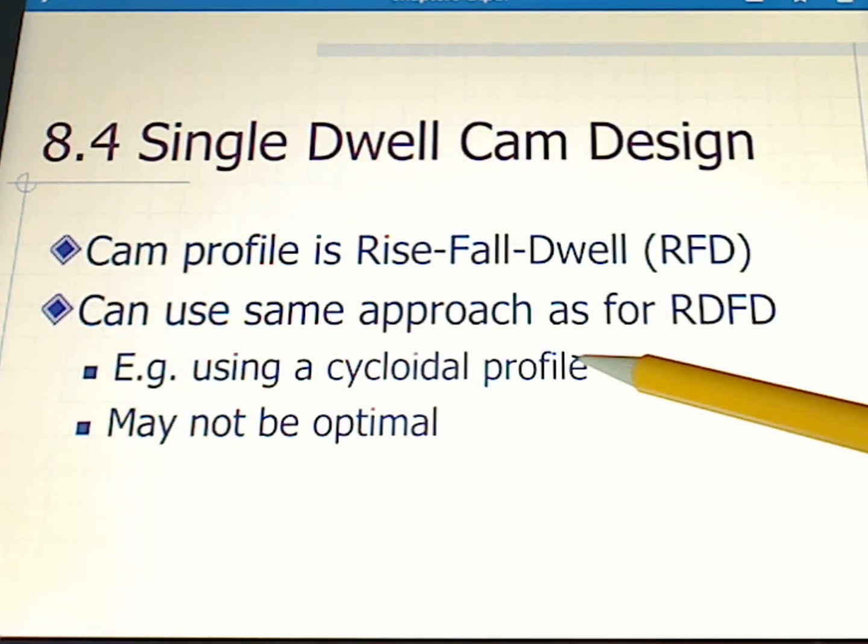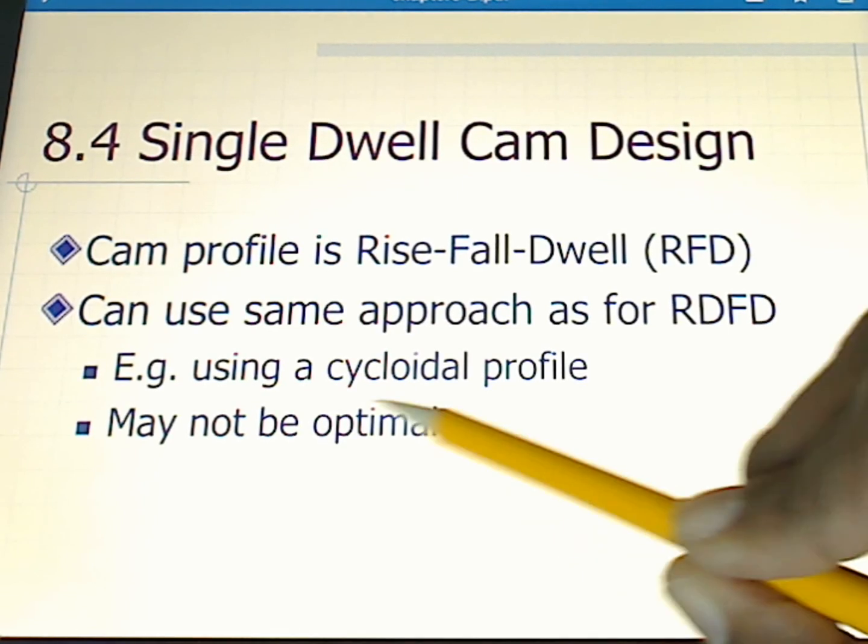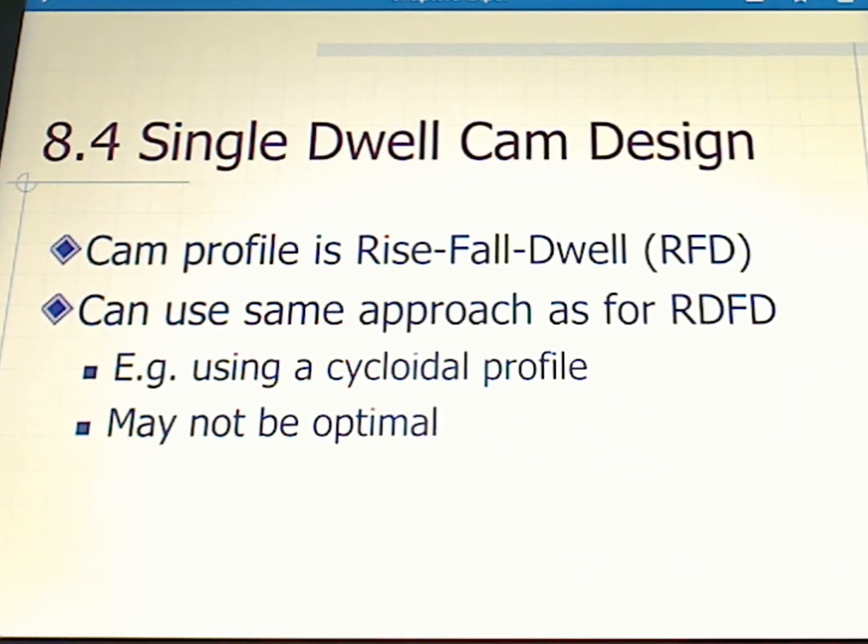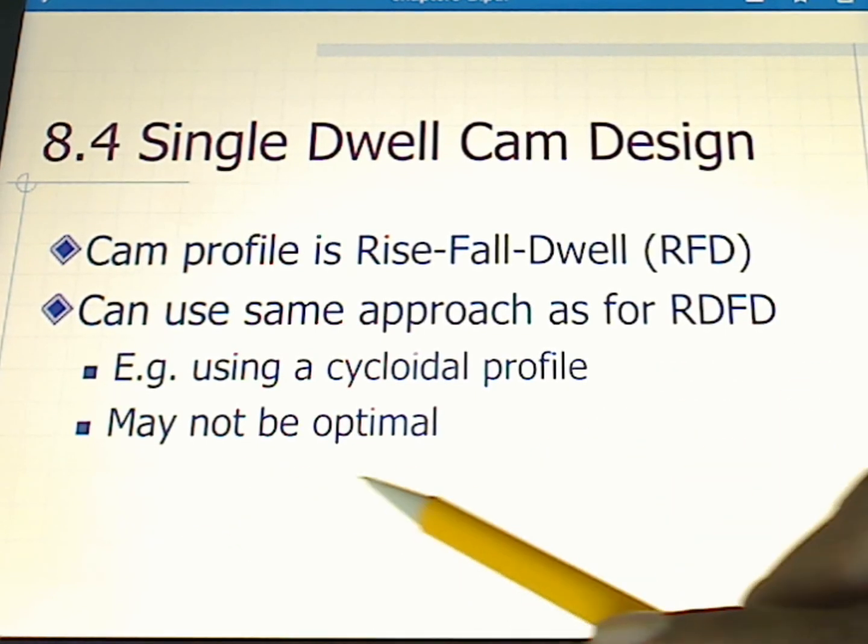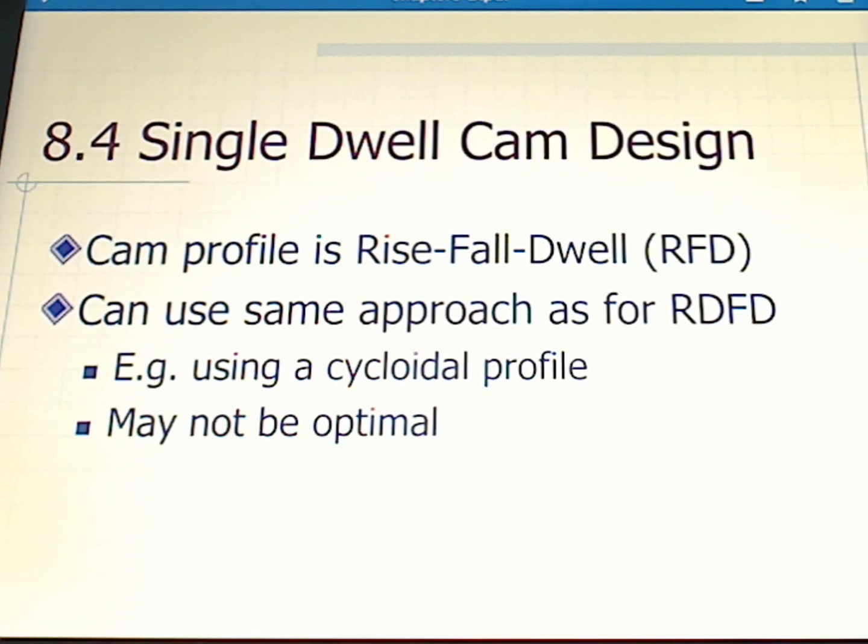We're going to use the same approach as we did previously for the double dwell, which was rise-dwell-fall-dwell. Previously for that design we used a modified trapezoidal. However, in this particular case we're going to use a cycloidal profile, also part of the SCCA family of curves. However, starting off we're going to warn you that our result may not be optimal.